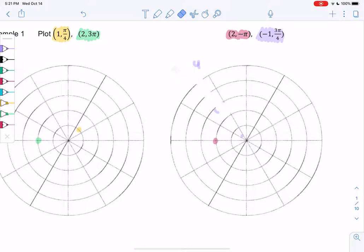You find the angle and then reflect across the origin. So for -1 at 3π/4, reflect over the origin. That's really the only weird point, the negative r's.